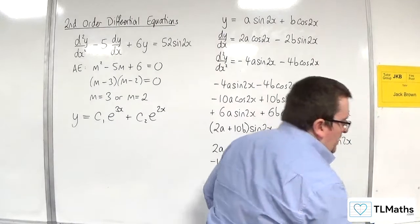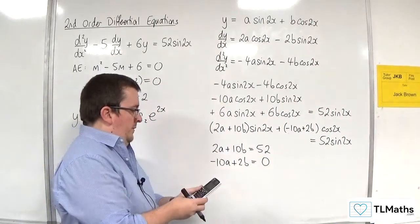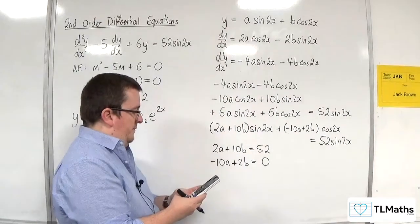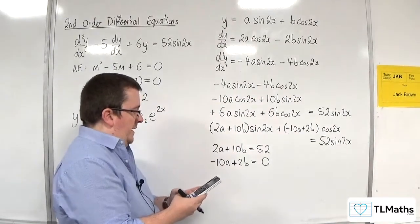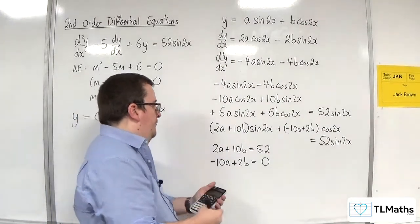So, I'm going to plug them into my calculator to do that. So, menu. Solve the simultaneous equations. So, 2, 10, 52. Minus 10, 2, 0. And we get 1 and 5.